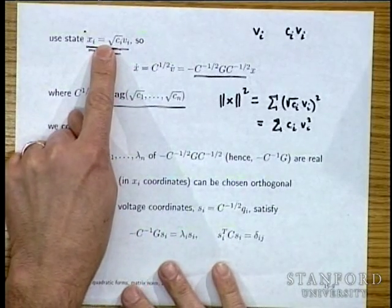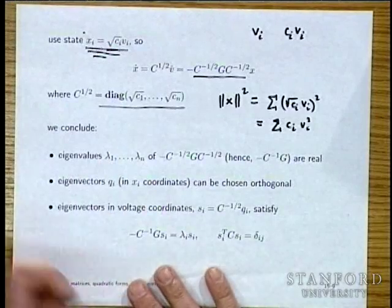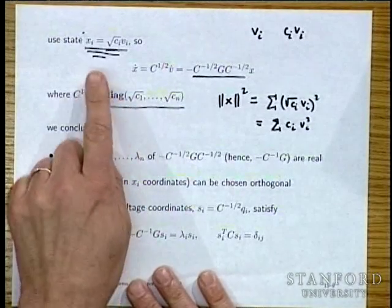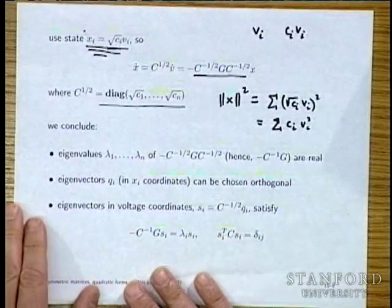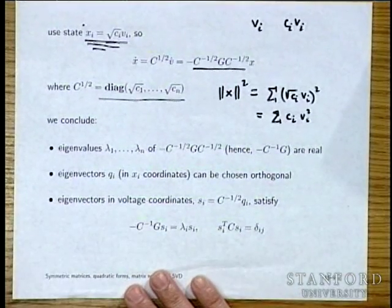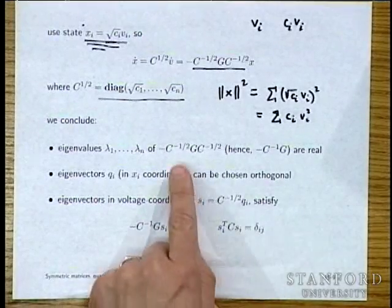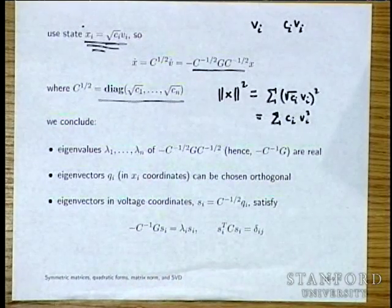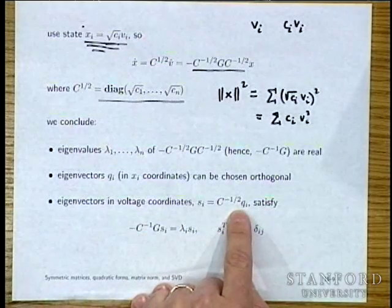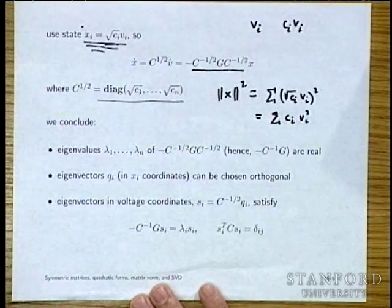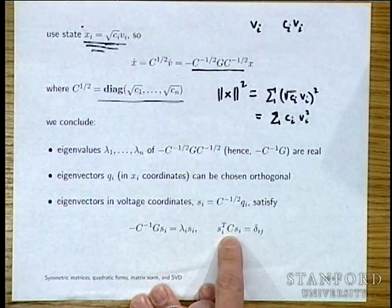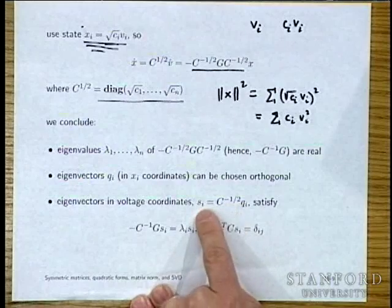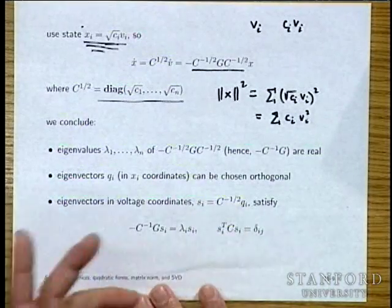In these coordinates, the A matrix is actually symmetric. That means lots of things: the eigenvalues are real and negative, and the eigenvectors can be chosen to be orthogonal. If you express them in the voltage coordinates, the eigenvectors are not orthogonal, but they are what people would call C-orthogonal — meaning S_i transpose S_j equals zero if i is not equal to j.